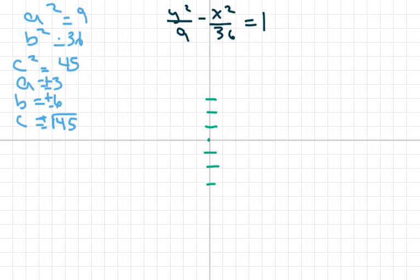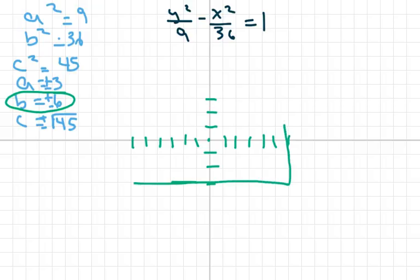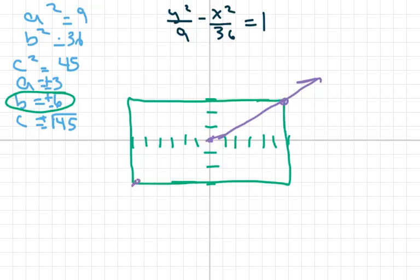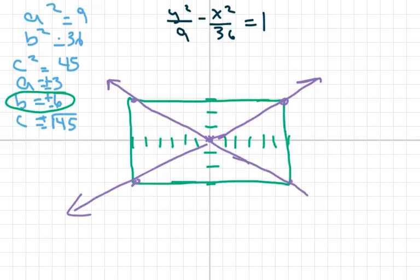The b value is 6, so I go over 6 on x (plus 6 and minus 6). I draw the box, then draw the asymptotes from corner to corner — one is the plus slope, the other is the minus slope. Since y starts the equation, the hyperbola opens up and down.